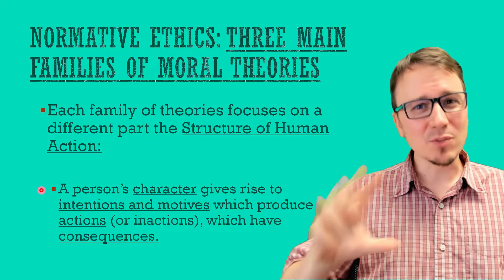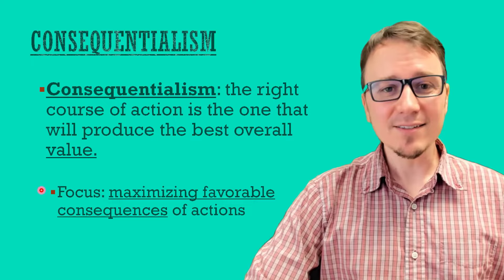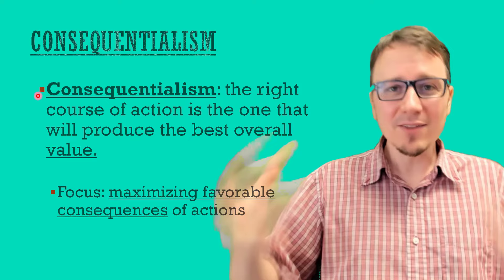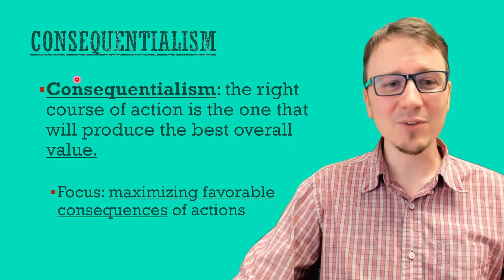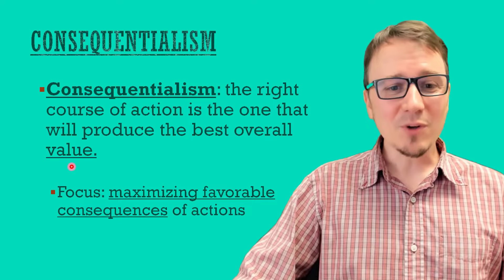So whether an action is right or wrong depends on one of these things, and each moral theory presents a different consideration for which one is most important. Our first one is the easiest to understand, and that's consequentialism. Consequentialism says the primary thing we should consider is what comes after an action — the right course of action is the one that will produce the best overall value, the best overall consequences. The focus here is maximizing favorable consequences.